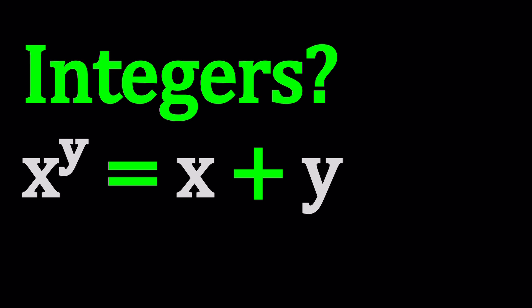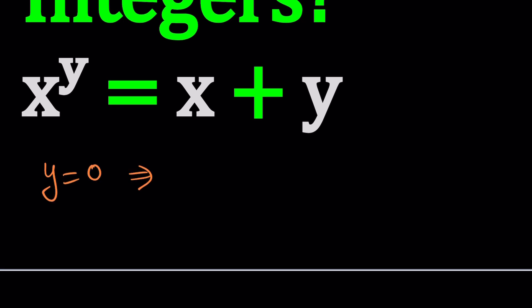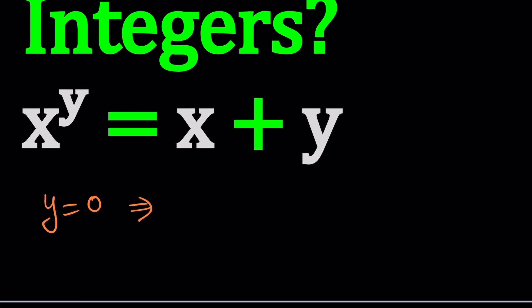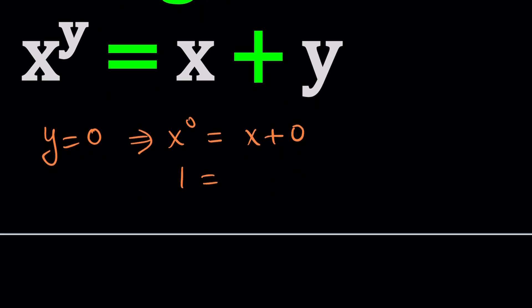Let's start with y equals 0. The reason why I start with y equals 0 is because y is in the exponent. When you raise any number to the power 0, you get 1. So if y is equal to 0, we get x to the power 0 equals x plus 0. As you know, x to the power 0 is 1, which equals x. We arrived at a really nice solution. y equals 0 implies x equals 1, which means 1, 0 is a solution ordered pair.